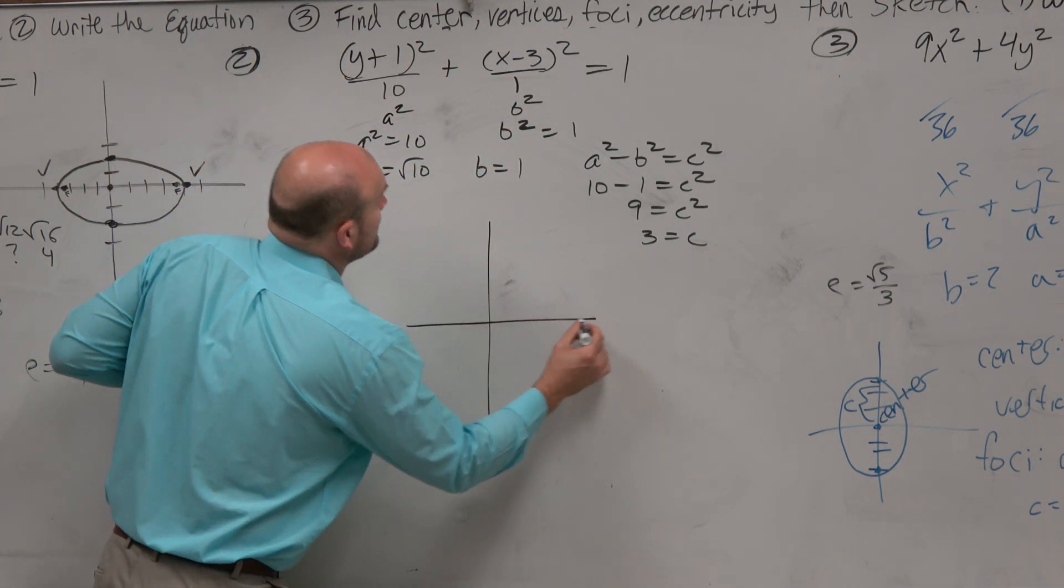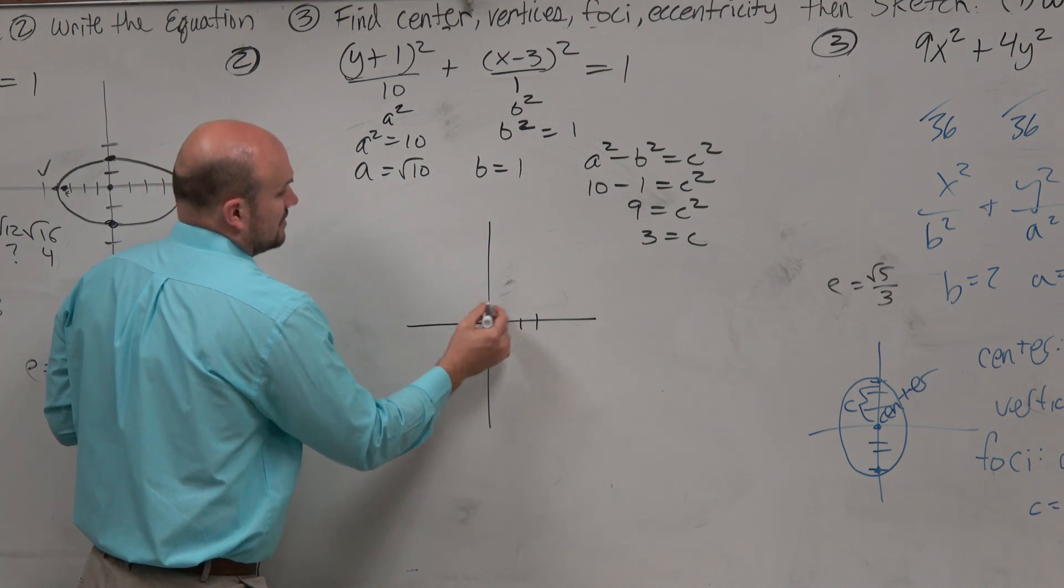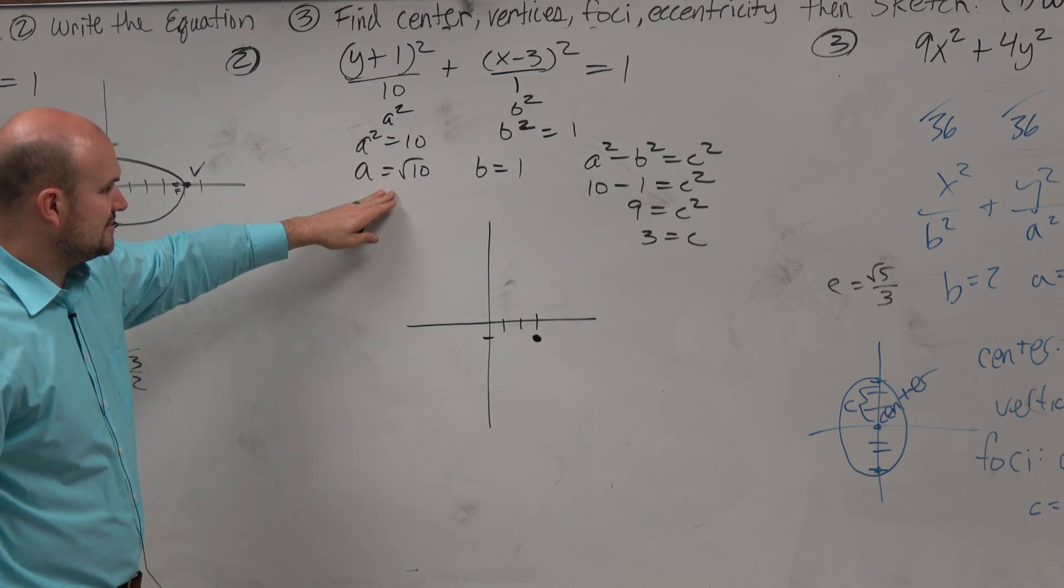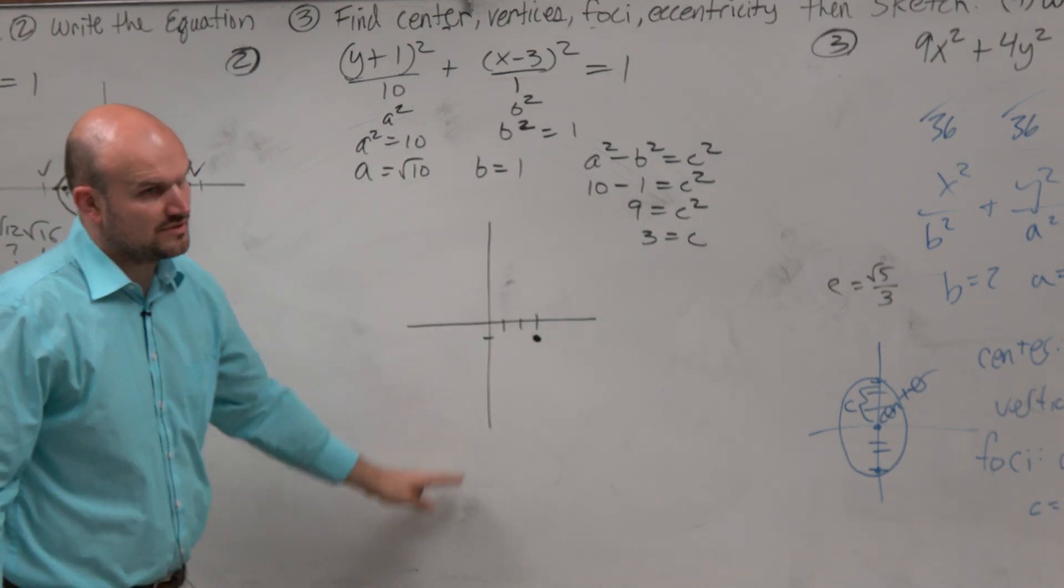So let's go ahead and plot this. 1, 2, 3, down 1. Now a, that does not look for the thing. So we're going to go up square root of 10, down square root of 10.